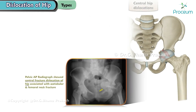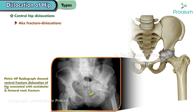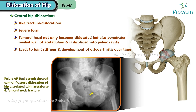The third type is central hip dislocations, also known as fracture dislocations. This is a severe form of dislocation where the femoral head not only becomes dislocated but also penetrates the medial wall of the acetabulum and is displaced into the pelvic cavity. This type often leads to joint stiffness and the development of osteoarthritis over time.